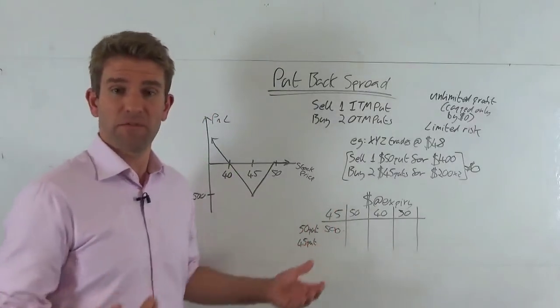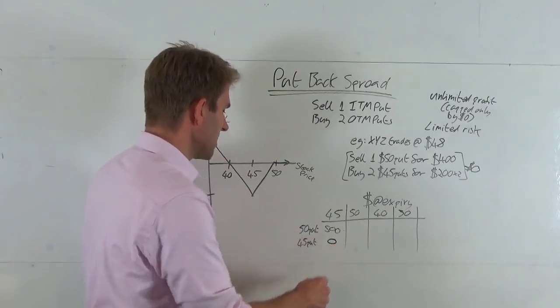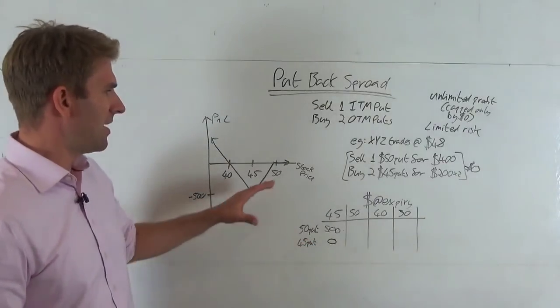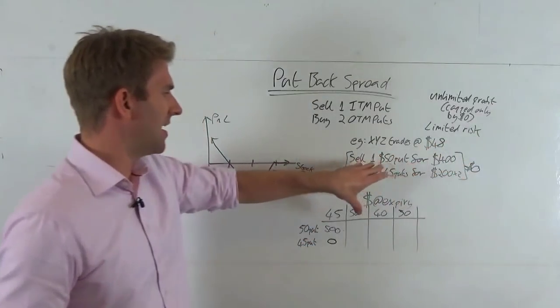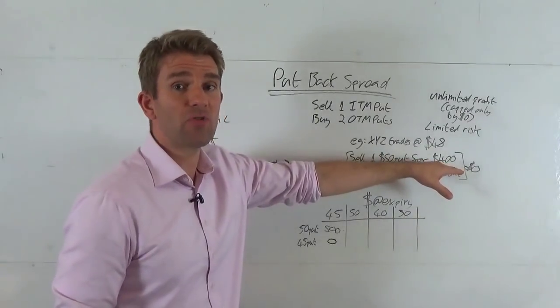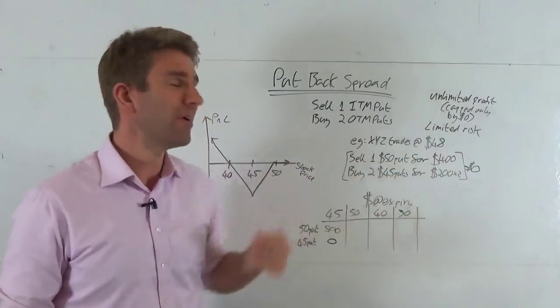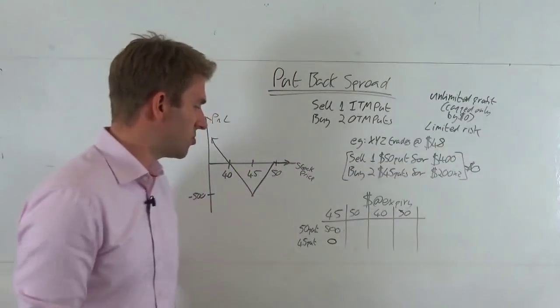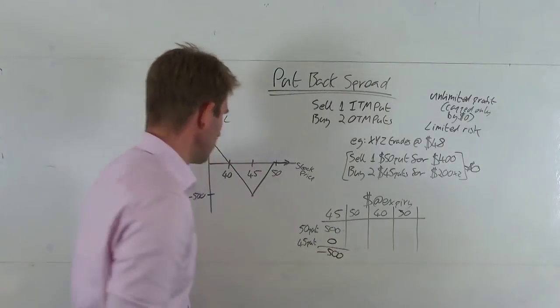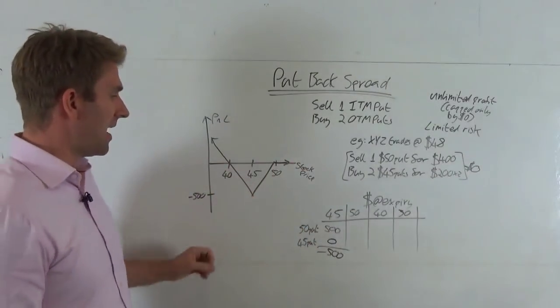So how is that fair for what we've paid out? Unfortunately, we haven't actually received any credit here because the $50 put - we also received $400 for that - we have to pay out $500. That's okay, so we've lost $100 on that. But unfortunately we've lost the full $400 on those two. So our net loss is -$500, and you can see on this chart that's our peak loss.